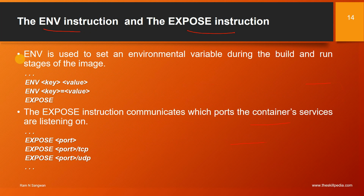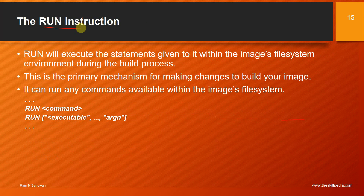The ENV instruction sets an environment variable during the build and run stages of the image, for example: ENV key=value. The EXPOSE instruction specifies which port the container services are listening on, such as a port number optionally followed by a protocol like TCP or UDP. The RUN instruction executes commands within the image file system during the build process — the primary mechanism for making changes to build your image. You can use RUN followed by a command or RUN in exec form with an executable path and arguments.